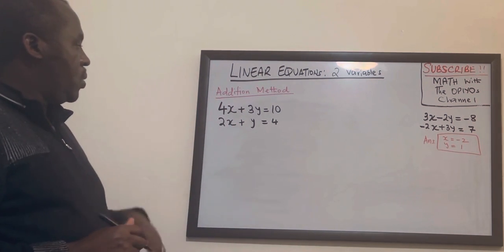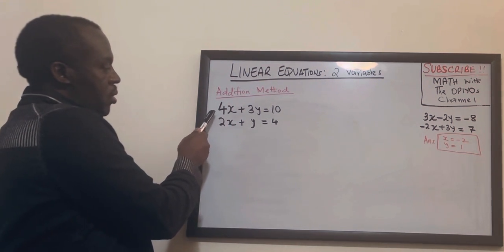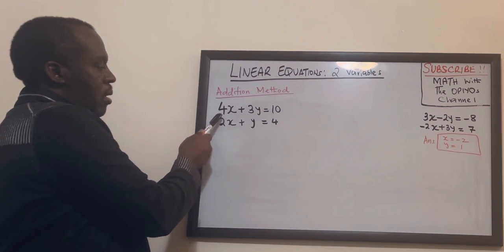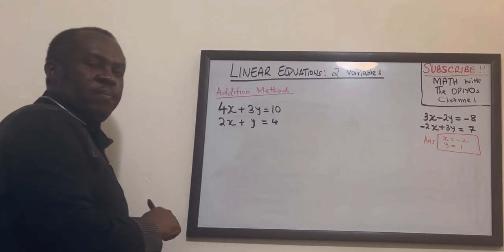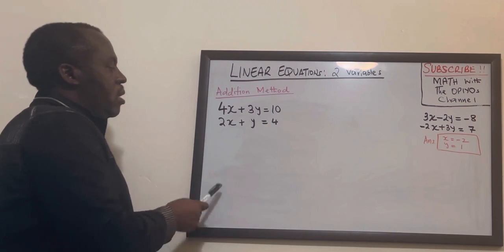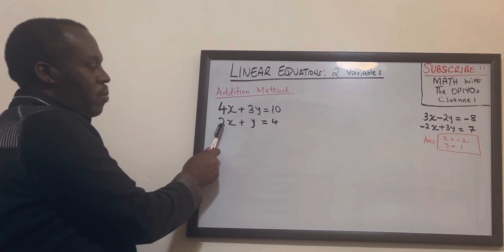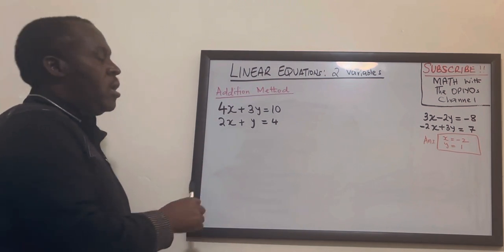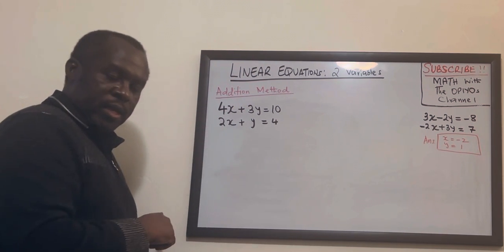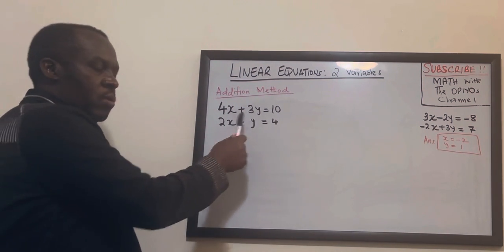So what I want to do here, I choose to make the x values to be the same in both equations. For example this is 4x, so I want to make this also to be 4x so that when I subtract it will eliminate the x's and then I remain with y.